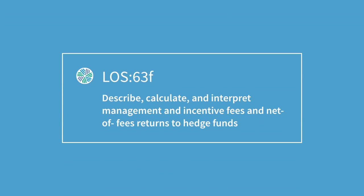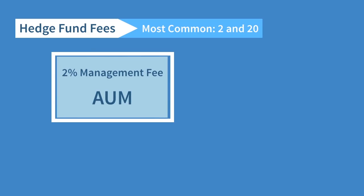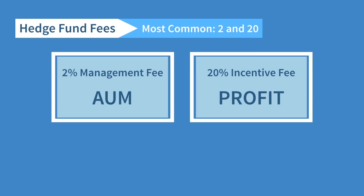Moving on, we are going to calculate and interpret hedge fund fees. The most common fee structure in hedge funds is a 2 and 20, meaning a 2% management fee and a 20% incentive fee. The management fee of 2% is based on AUM — assets under management — and is paid every single year regardless of performance. The incentive fee is based on profits earned and can be complicated further by either a hurdle rate or a high watermark, or both.